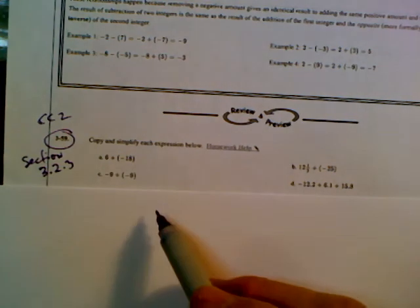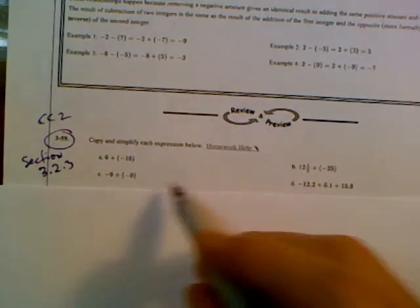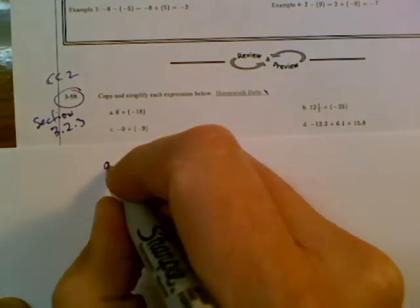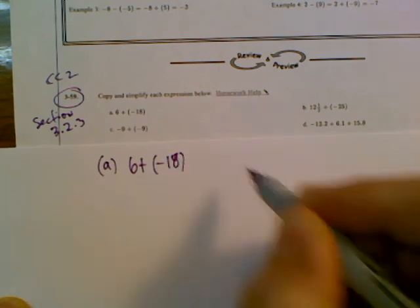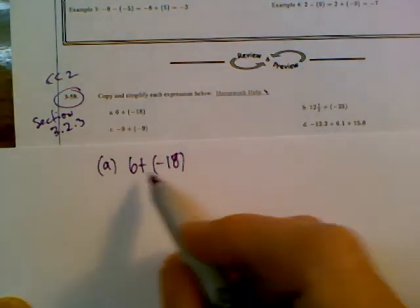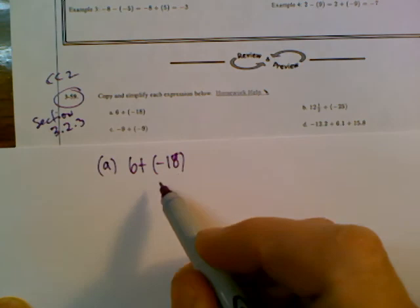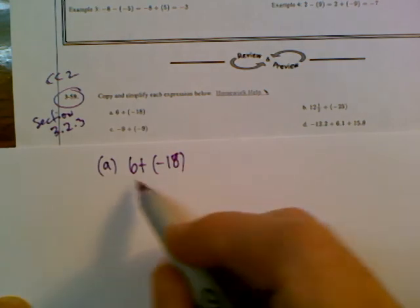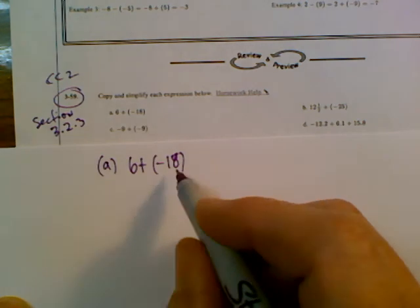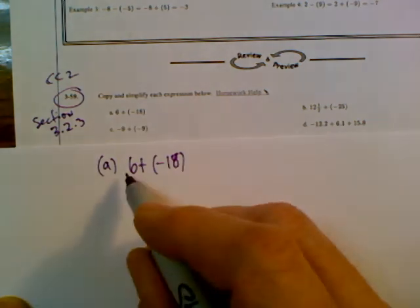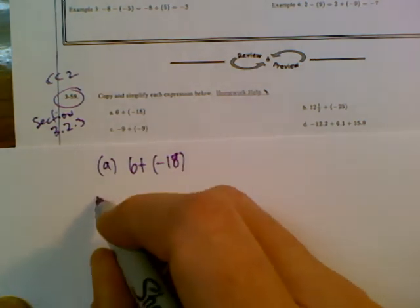So we've got four expressions to simplify. I'm going to go through each one. I'm going to rewrite so we can see them better. A says 6 plus negative 18. If I'm taking 6 and I'm adding negative 18 to it, we have opposite signs, a positive and a negative number. When adding a positive and negative number, opposite signs, you subtract the numbers.